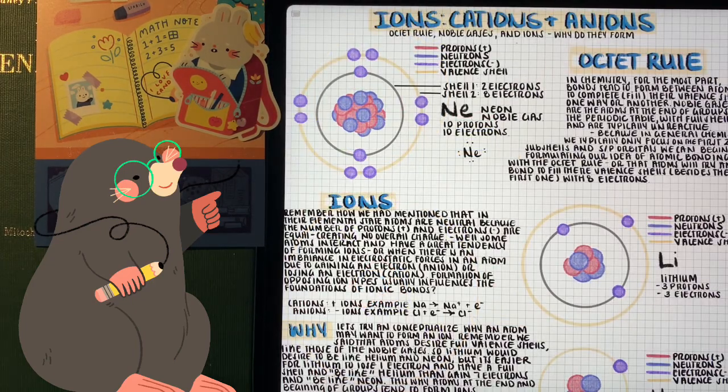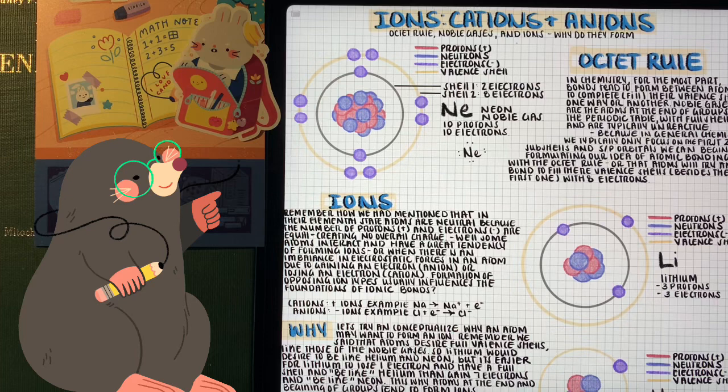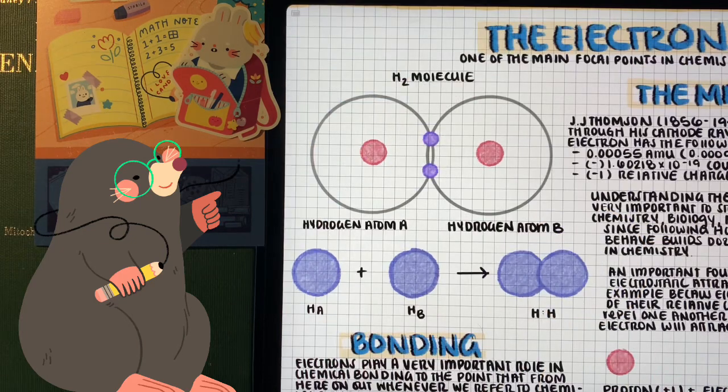One important thing to know is that the atoms listed on the periodic table are known to be in their elemental form, meaning that they're neutral. The number of protons equals the number of electrons. This is important because the electrostatic attraction between the protons and the electrons cancel each other out. So for example, neon here has 10 protons and 10 electrons, so there's no overall charge. But moving forward, we're going to see that atoms can lose electrons and even gain electrons without changing the core atom.